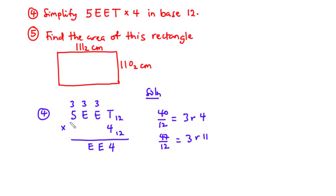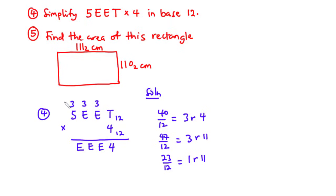4 times 11 is 44, plus 3 is 47. 47 divided by 12 is 3 remainder 11. So here also we have E. And then we carry on 3. Now, 4 times 5 is 20, plus 3 is 23. 23 divided by 12 is 1 remainder 11. 12 times 1 is 12. 23 minus 12 is 11. So we have E here and carry on 1. So we have 1 here, and this is our final answer: 1EEE4 base 12.